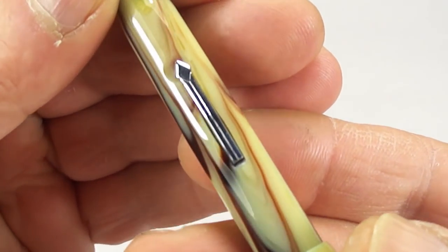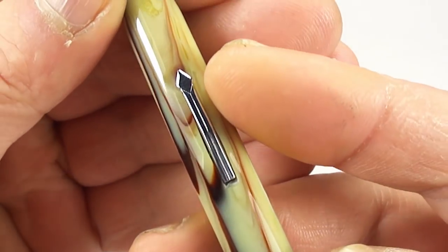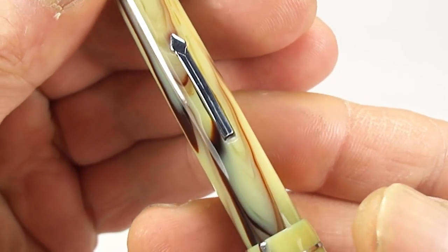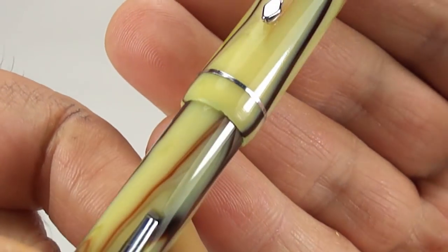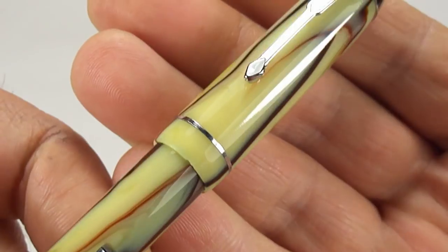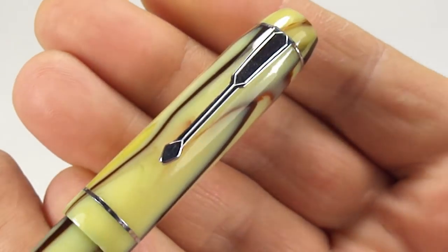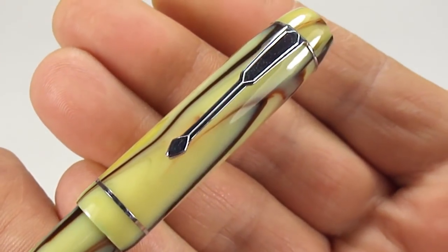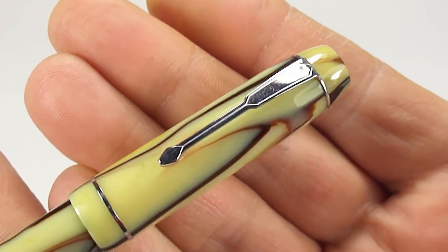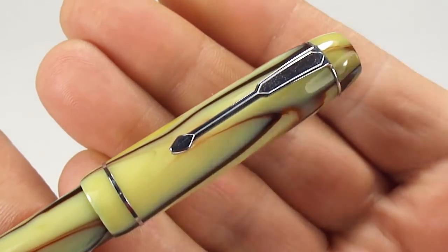Let me show you the trim. You can see the lever has this slightly arrowhead lever, again in polished chrome. The band there, the cap band, just a small single cap band.